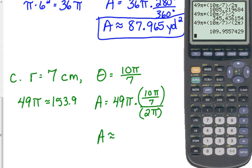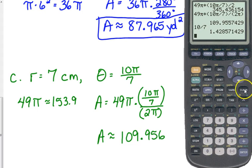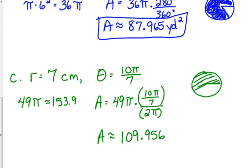So our area is approximately 109.956, and 10 pi over 7 might be bigger than I thought. All right.